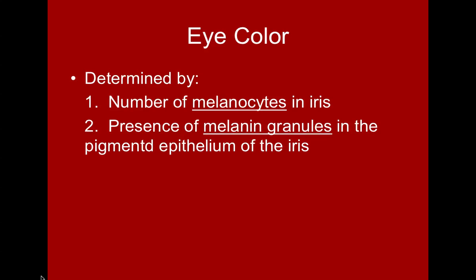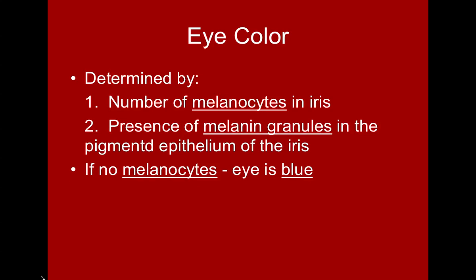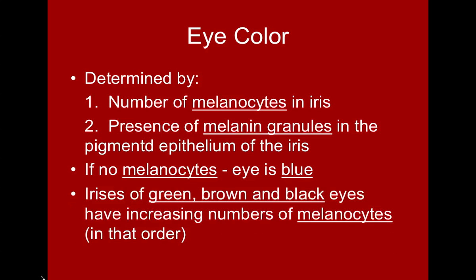With no melanocytes present — only the melanin granules — eyes will be blue. If melanocytes are present along with melanin granules, this creates a sliding scale of green, brown, and black. Green has fewer melanocytes than brown, and brown fewer than black. People with albinism have neither melanocytes nor the granules, so their eyes aren't even blue — they have a pinkish or reddish tone.